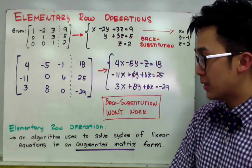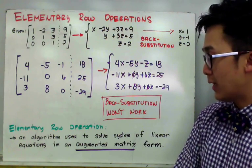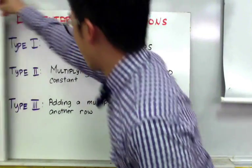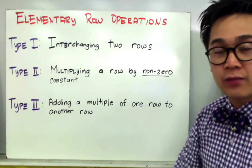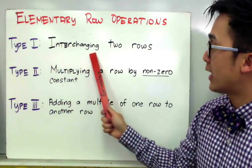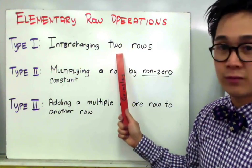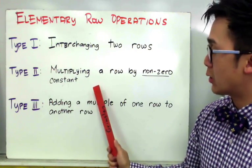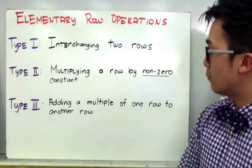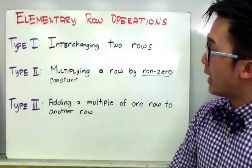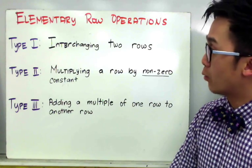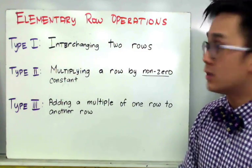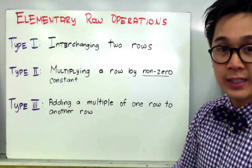The elementary row operation is an algorithm used to solve systems of linear equations in augmented matrix form. We have three types: the first type is interchanging two rows; the second type is multiplying a row by a non-zero constant; and the third type is adding a multiple of one row to another row. These are the operations we will use in our examples.